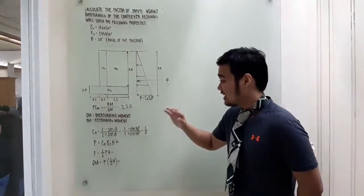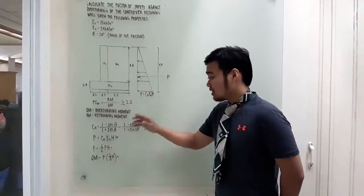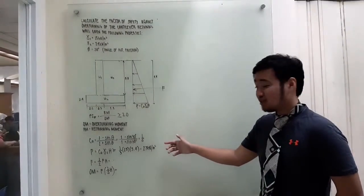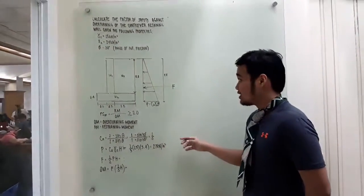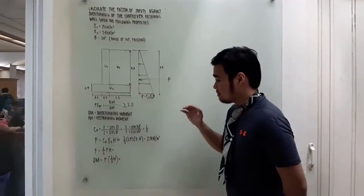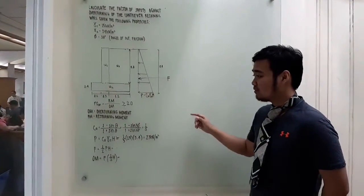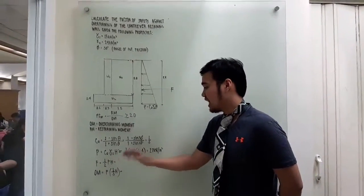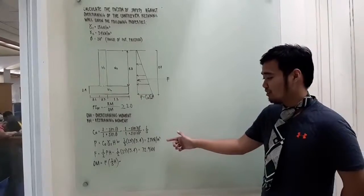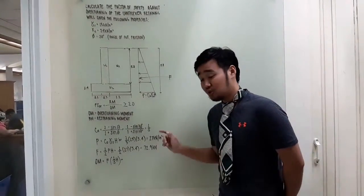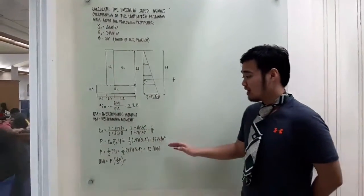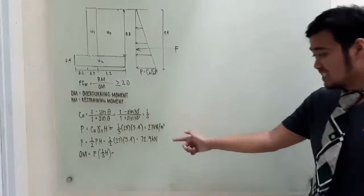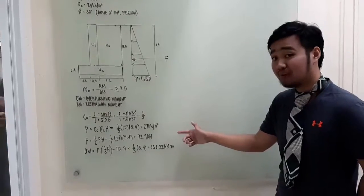Now that we have the values for the lateral soil pressure, substituting the values, we have a lateral soil pressure of 27 kN/m. The lateral soil pressure must be converted to a point load, which is ½ × P × H, giving a point load of 72.9 kN. So now that we have the values, we can determine the overturning moment, which is 131.22 kN·m.